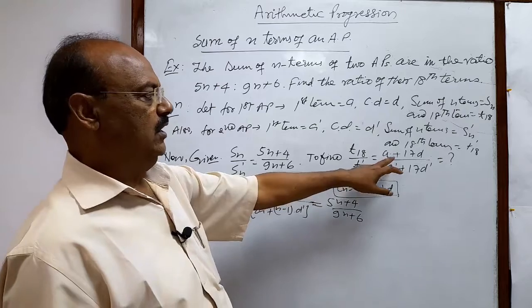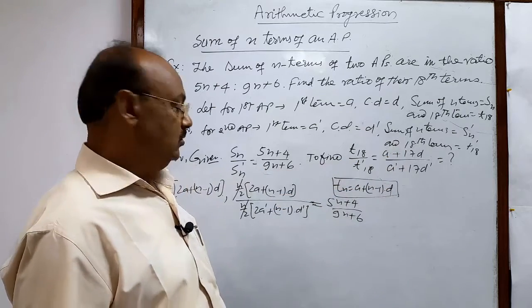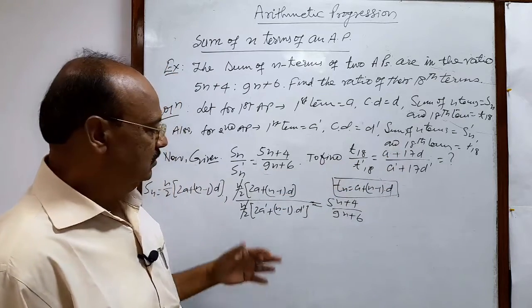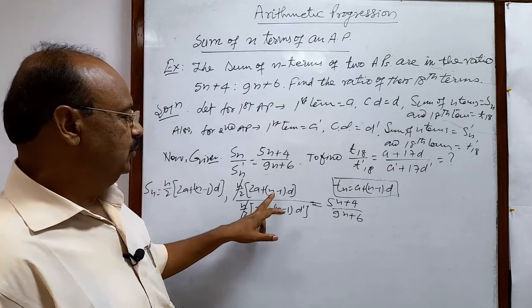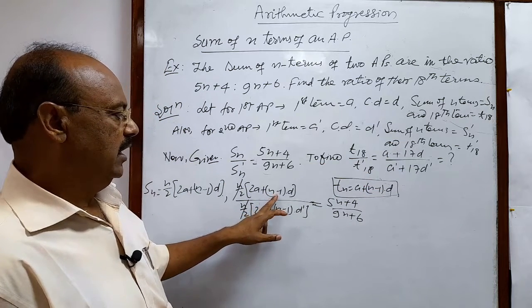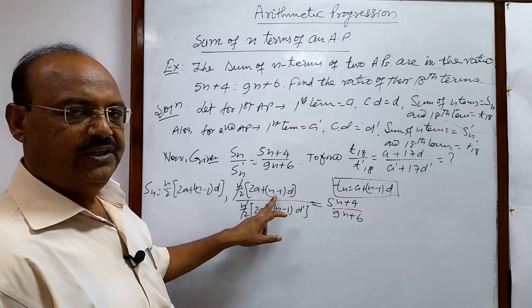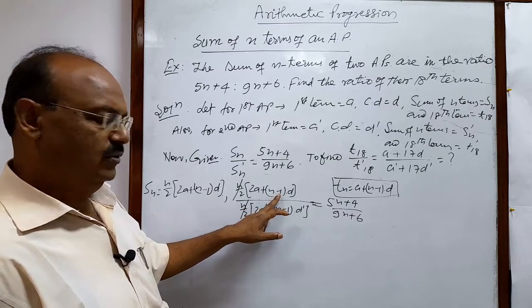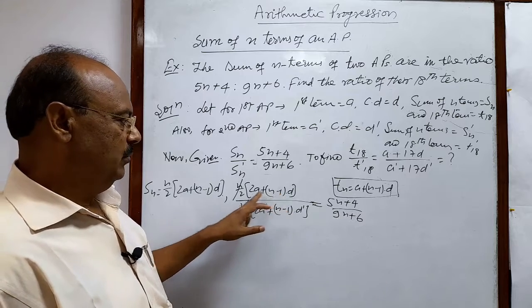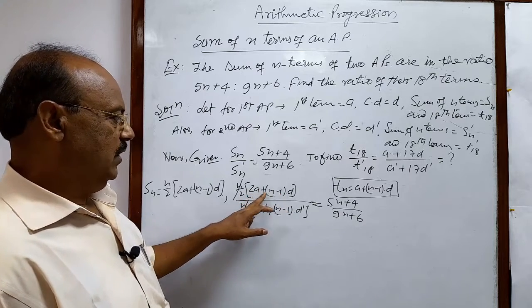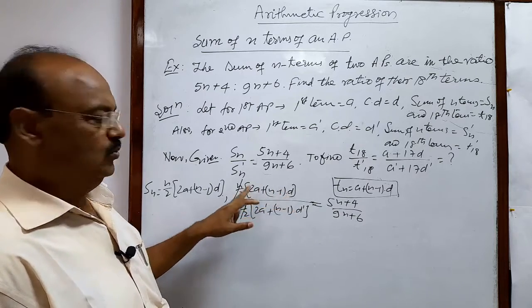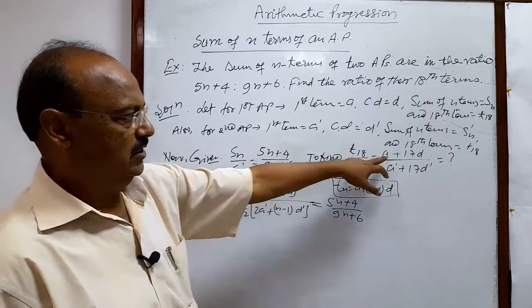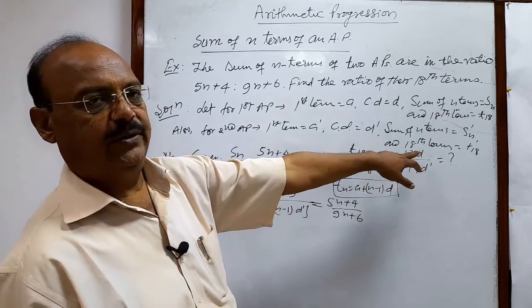And what we have to find out: a plus 17d. So very tactfully, if you put n is equal to 35 here, how we decide n will be 35? Because 35 minus 1 is 34, and if you take 2 common, it comes a plus 17d. By taking 2 common, we get a plus 17d.